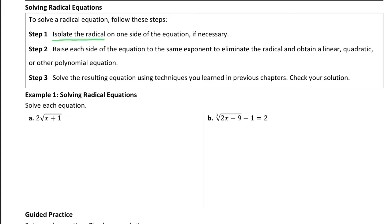And then you raise each side of the equation to the same power to eliminate that radical. So if you have a square root, square both sides. If you have a cube root, cube both sides. If you have a sixth root, raise both sides to the sixth power.